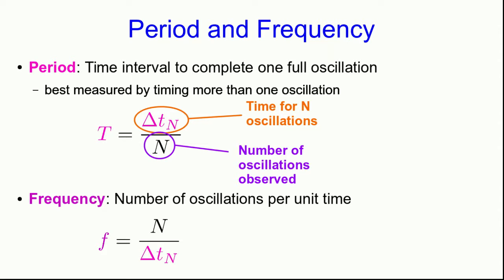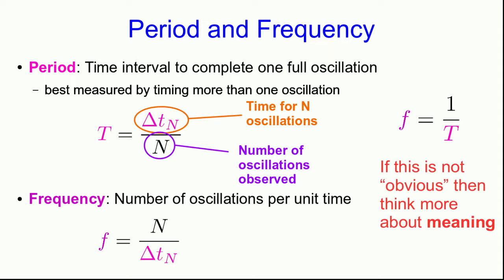The frequency is the number of oscillations per unit time. You can see that the frequency must be one over the period. I rarely put equations into the first few lectures of any unit, and the reason I've included these is that the definitions — period as time per oscillation and frequency as oscillations per time — make these equations obviously true. If they're not obvious to you, you should think more about the meaning of period and frequency and how you would measure them in practice. If you understand that, then these equations should be obvious.